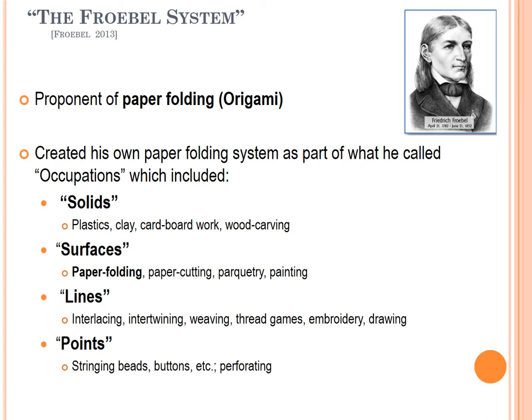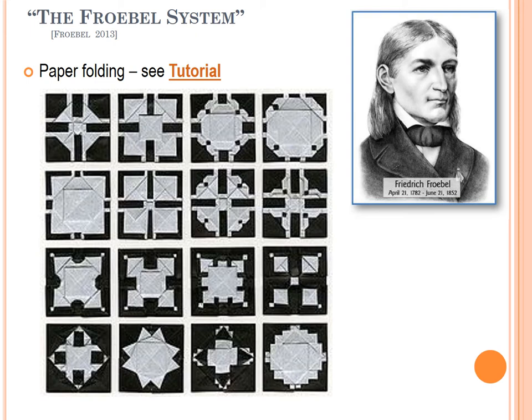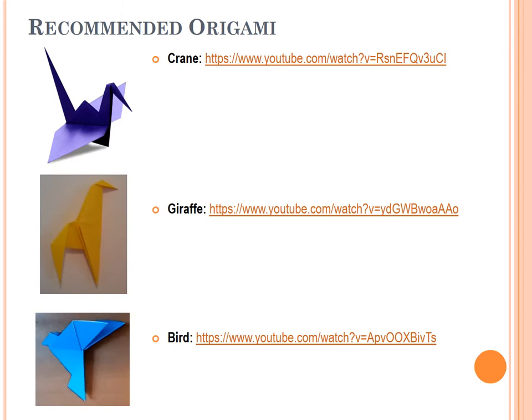Froebel had his own origami system — he was certainly influenced by Asian cultural things and thought, though he developed his own kind of paper folding system. Paper folding is a key thing in architecture: to think about the transition from two-dimensional to three-dimensional space — how a building is somewhat a three-dimensional unfolded representation of a two-dimensional thing. This is Froebel's version of origami shown here.